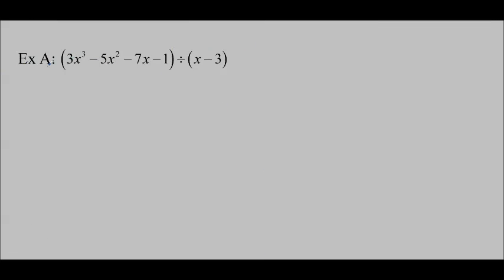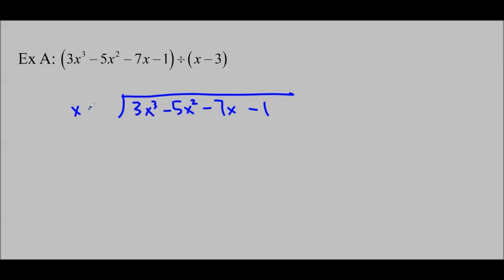Let's do some practice on polynomials. I'm going to take the divisor and put it on the inside. The method is exactly the same as with the numbers, except that I'm only going to concentrate on the first terms. I'm going to look at x, this x term, and I'm going to look at this 3x cubed. I have to ask myself: what times x is equal to 3x cubed? The answer is 3x squared. So I'm going to line it up with the x squared and write 3x squared.